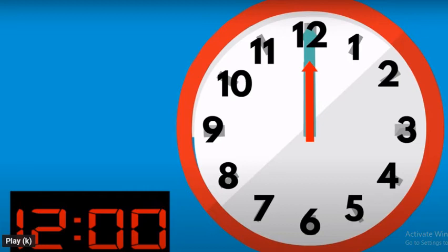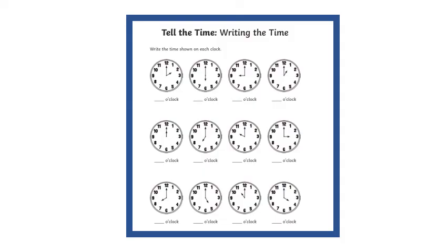Now you're able to tell me what time it is. Here's your homework. I want you to tell the time. Underneath each clock, you look at the long pointer and the small one, and you see which number the small pointer is pointing at. For instance, the first one: the long pointer is pointing at number 12, and the small one is pointing at number 2. Then what time is it? It's 2 o'clock.